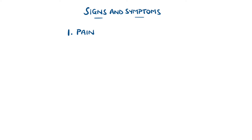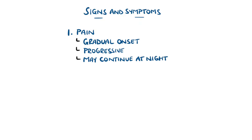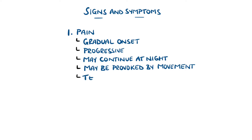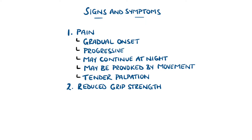Overall, it is usually a gradual onset of pain that progressively gets worse and can persist at night. It also tends to be worsened by use of the forearm, such as grasping, and the pain may also be elicited by palpating several millimeters distal to the epicondyles, which corresponds with the location of the tendons. People may also experience weaker grip strength.